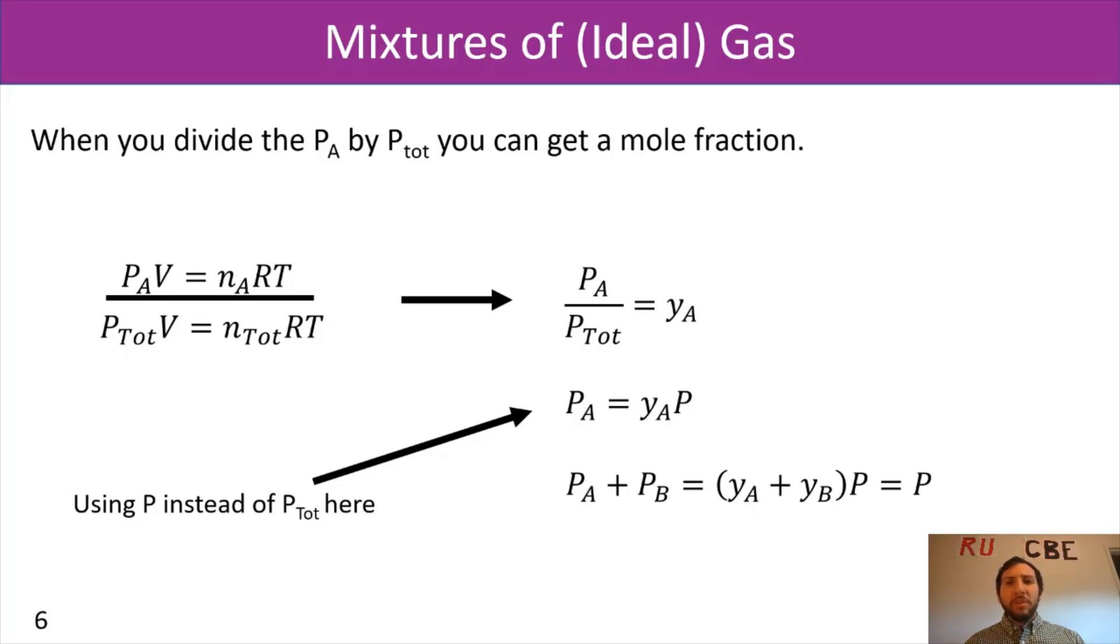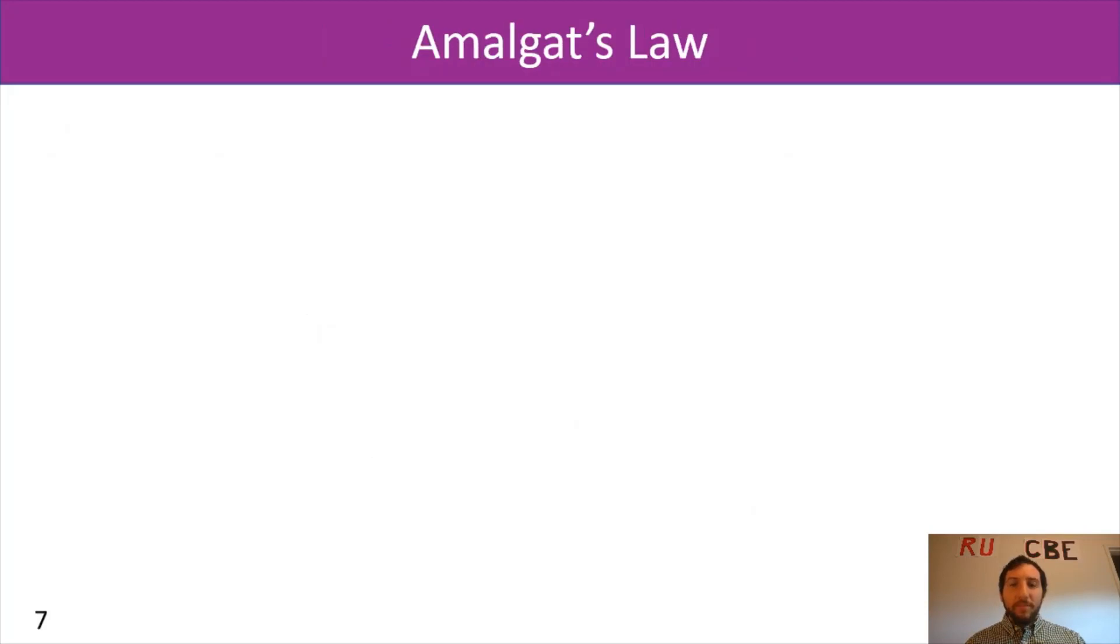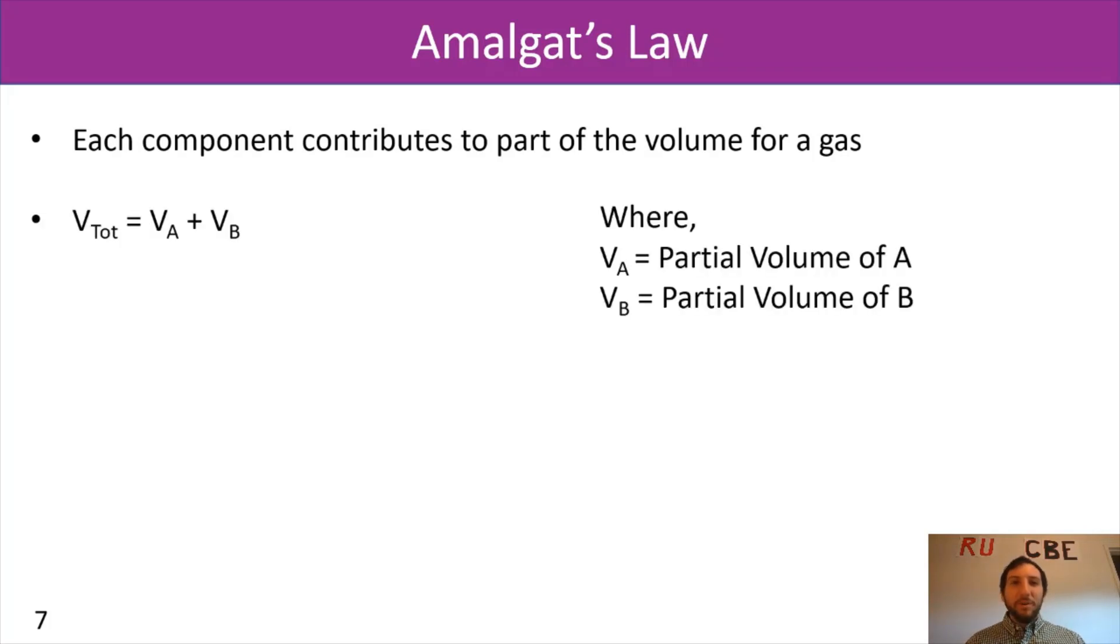Now we're going to do something very similar for Amagat's law. In Amagat's law, each component contributes to part of the volume for a gas. So this time around, instead of pressure, it's volume, but it's a very similar idea. So our total volume is going to equal the volume contributed by A plus the volume contributed by B. For an ideal gas, our P total times V total equals N total times RT. PV equals NRT, same deal.